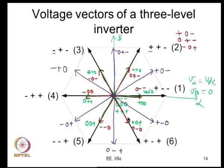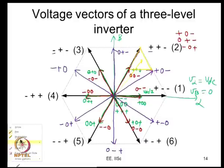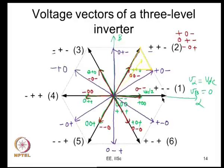To illustrate the waveform quality advantage: for a reference vector tip falling in a given triangular sub-region, a two-level inverter must use a null vector and two active outer vectors — the inverter state transitions span large distances in the vector space. With a three-level inverter, we can instead use the three nearest vectors within that sub-region, keeping transitions smaller. This is what makes the three-level inverter produce better output waveform quality for the same switching frequency — the error between reference and applied voltage is reduced.